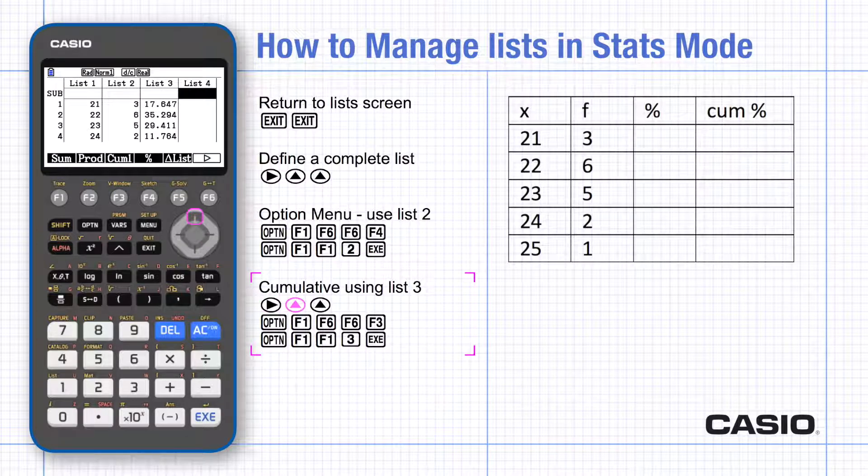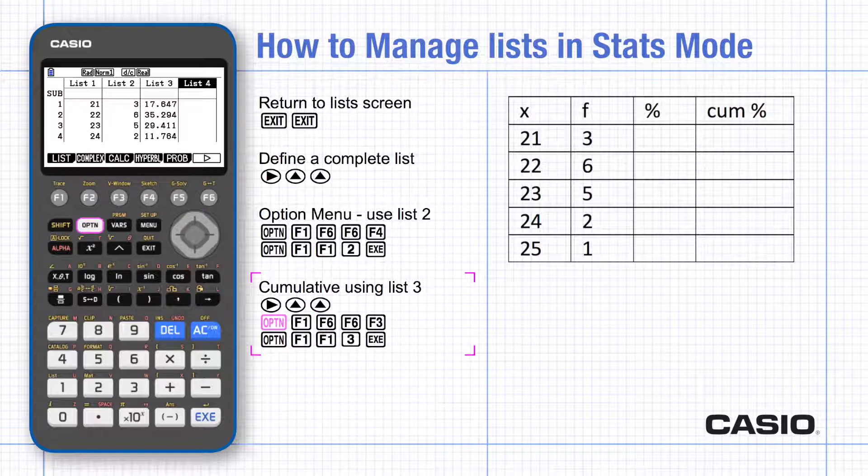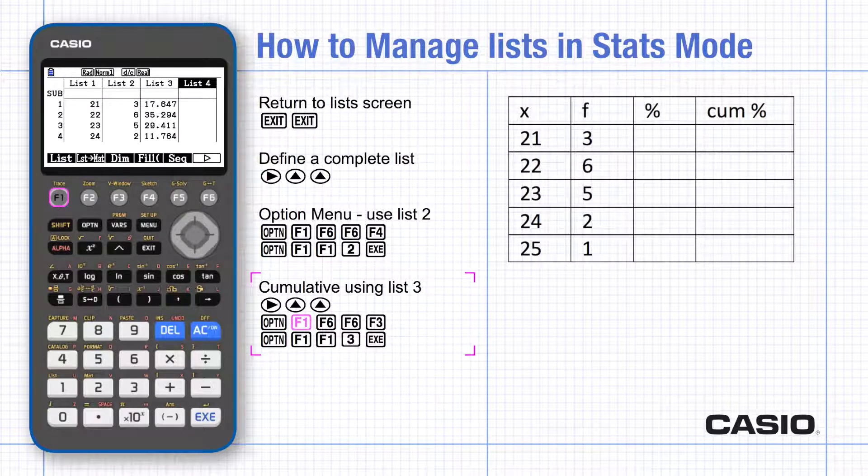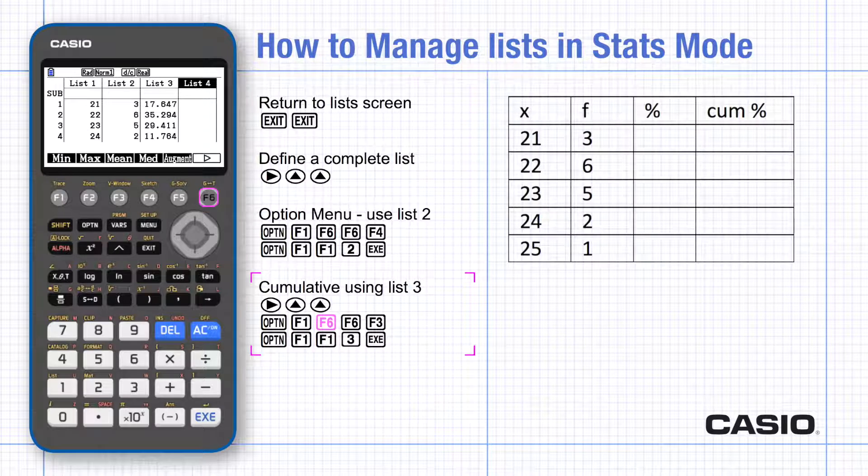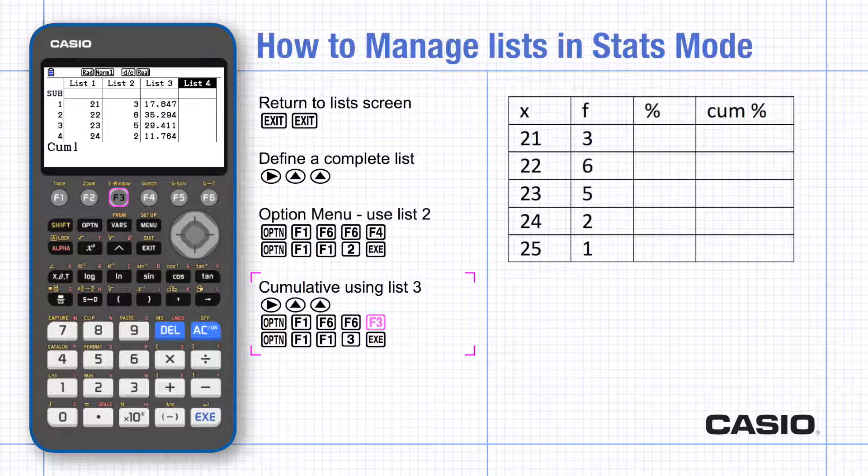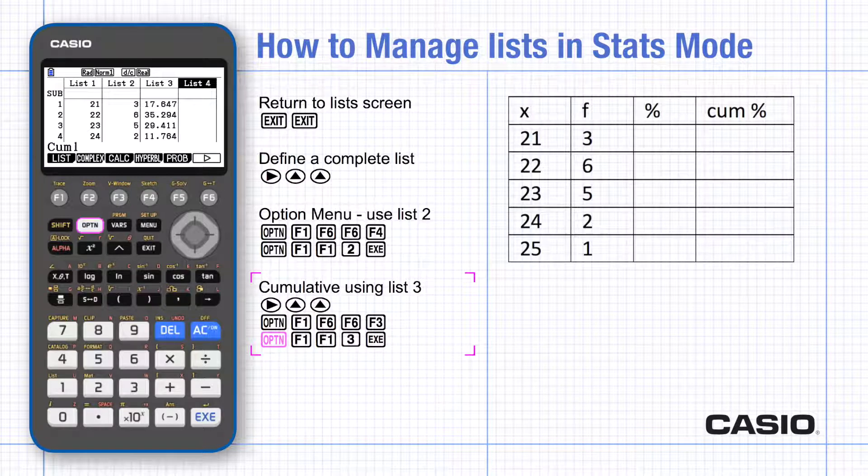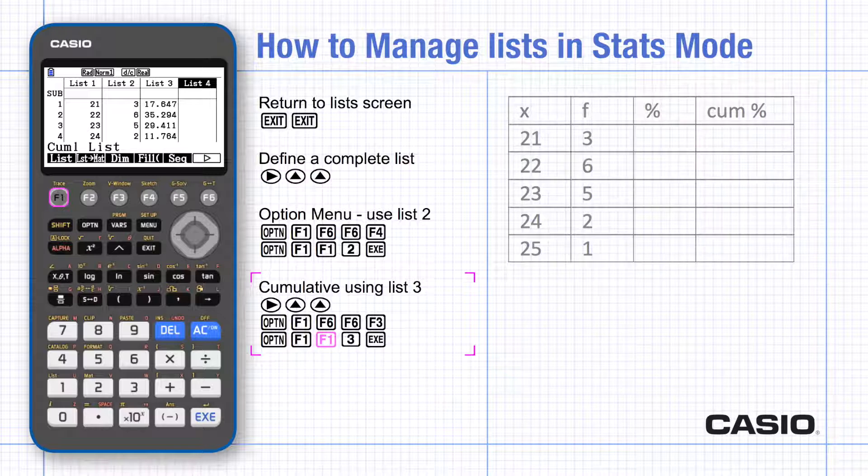List 4 can be used to display the cumulative percentage for each row, so option, list, and scroll to cumulative option to enter list 3 and execute. Notice it's just as easy to display cumulative frequencies by choosing list 2 instead of list 3.